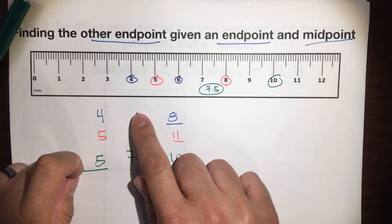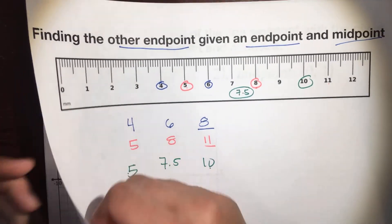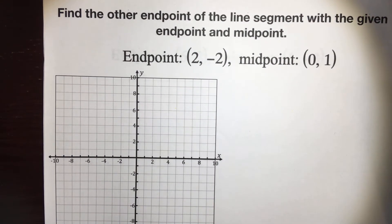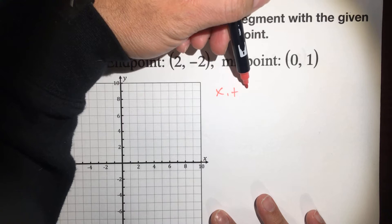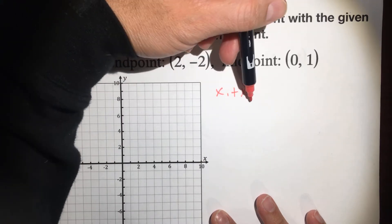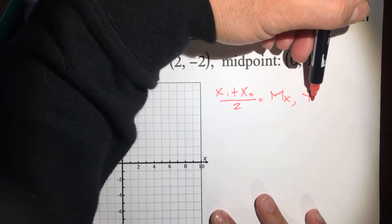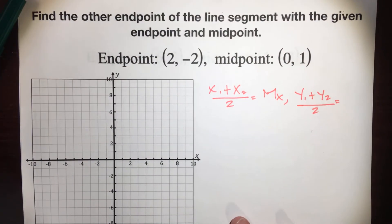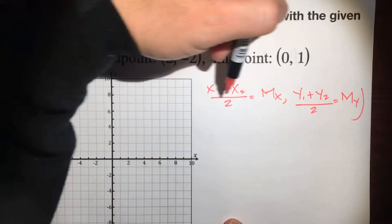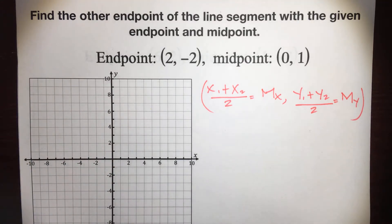Okay, so there is the situation — you're given the midpoint, and you need to find where your friend is at, where that other endpoint is. But the tricky part is it's not on one ruler. It is on the coordinate plane. So: find the other endpoint of the line segment with a given endpoint and midpoint. If you remember the formula, it is (x1 + x2) / 2 equals the x value of the midpoint, and (y1 + y2) / 2 equals the y value of the midpoint.